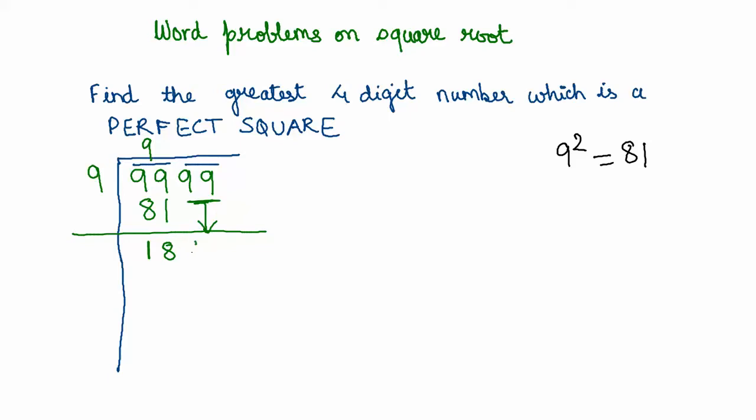Then we bring down this pair, so we get 1899. The third step is to double this. 9 times 2 is 18. We put a blank here and a blank here.